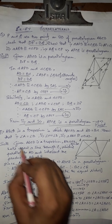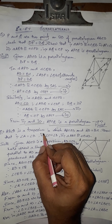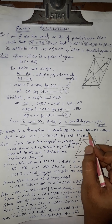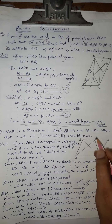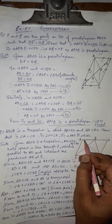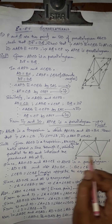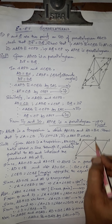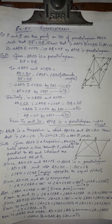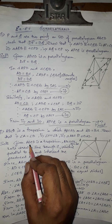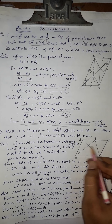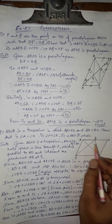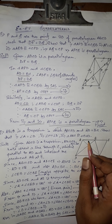The last exercise: ABCD is a trapezium in which AB is parallel to CD and AD equals BC. We have to show that angle A equals angle B, angle C equals angle D, and triangle ABC is congruent to triangle BAD. In the given, ABCD is a trapezium with AB parallel to CD and AD equals BC.